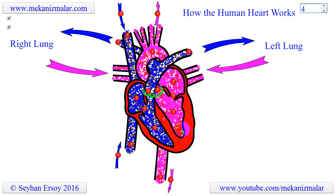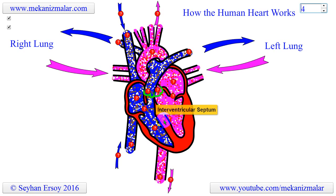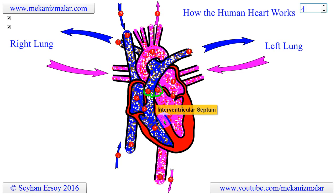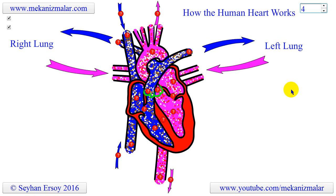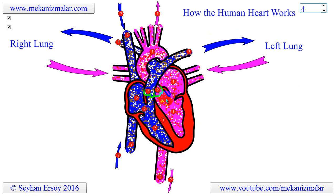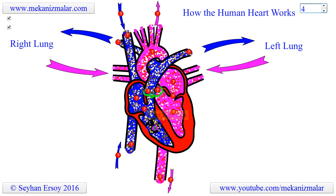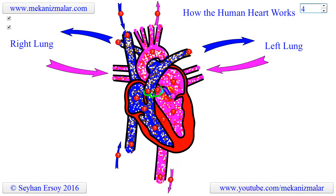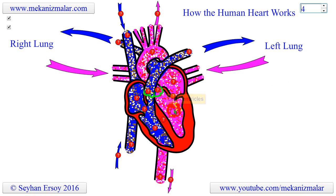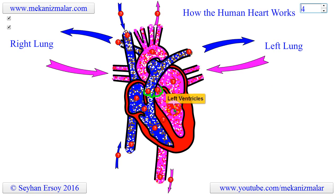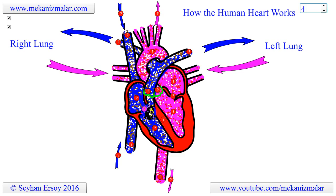These 2 pumps are separated from each other by the septum. Each pump has 2 stages, that is why our heart has 4 chambers. The right side of the heart pumps blood to the lungs to pick up oxygen, which I will call the first pump.